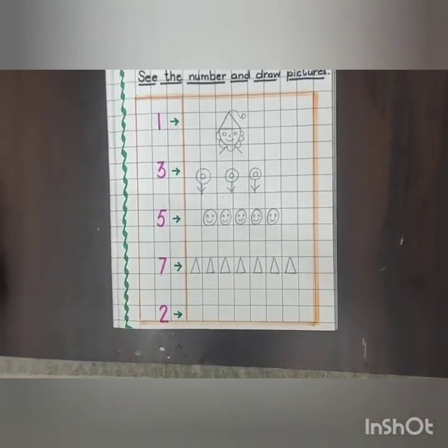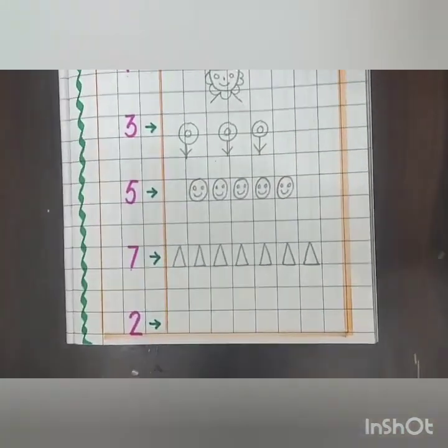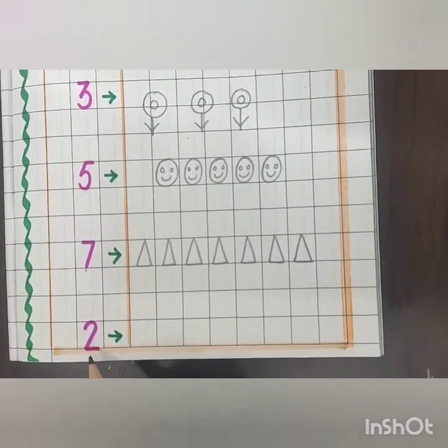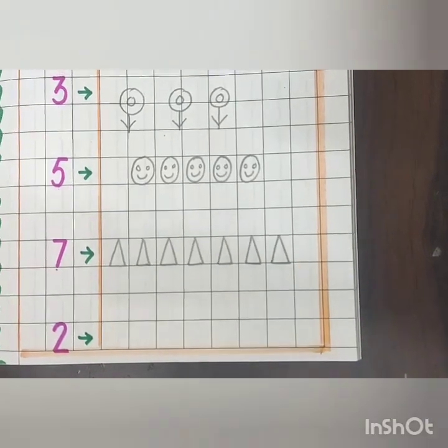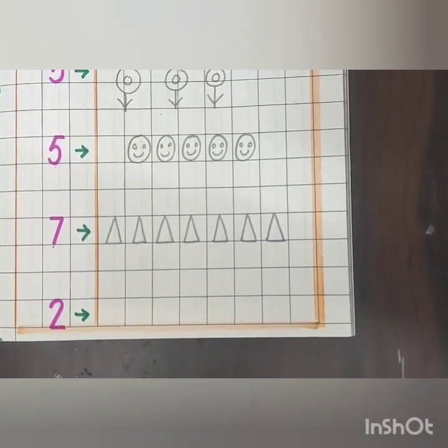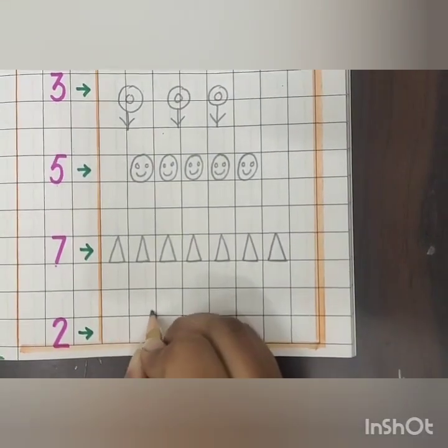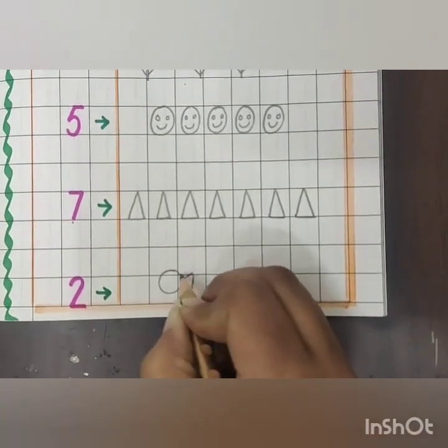Now the last number is number two, so here I will draw two pictures, okay. I will draw fish. I will draw two fish here like this.